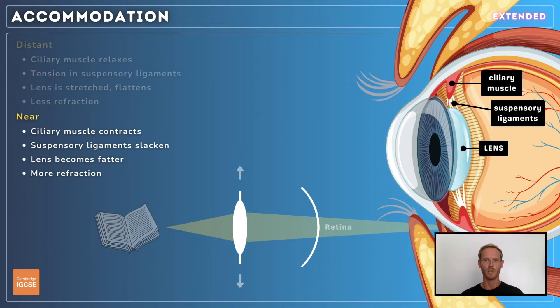When focusing on a near object, the ciliary muscle contracts, which constricts the circle of muscle and reduces tension on the suspensory ligaments and lens. The lens returns to its relaxed, convex shape, increasing the angle of refraction and focusing light onto the retina.